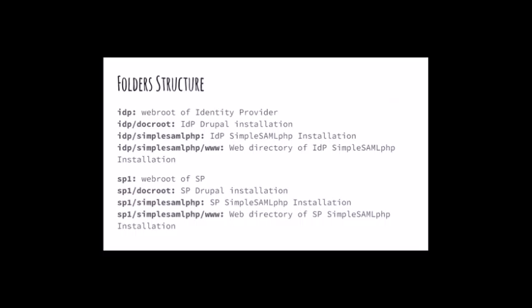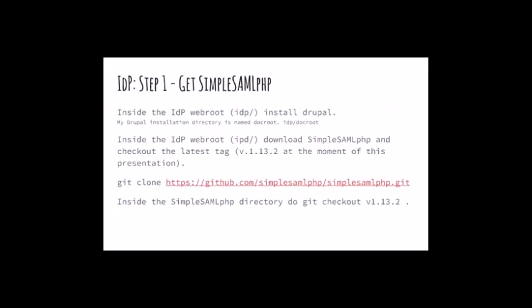So this is my folder structure. I've got the IDP web root, then the doc root where I have my Drupal installation. Then on the same level, the SimpleSAMLphp directory where SimpleSAMLphp is installed. Then I've got the WEB folder under SimpleSAMLphp, basically where you can access the admin panel of SimpleSAMLphp. Same configuration for the service provider — I've got the doc root with Drupal, SimpleSAMLphp installation, and then the web directory for the admin side of SimpleSAMLphp for the service provider.